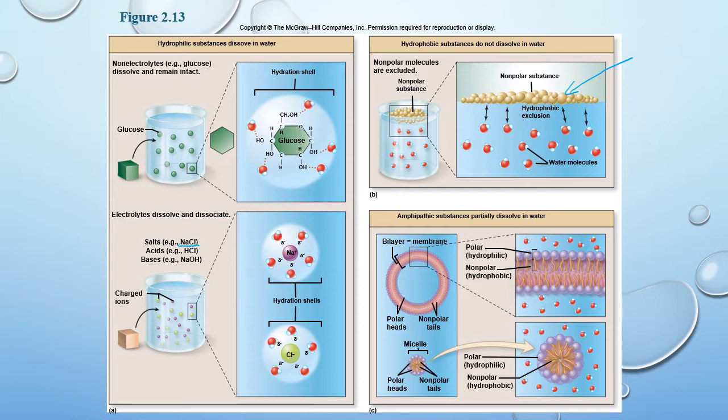Other substances are what we call amphipathic. Amphipathic substances are kind of halfway in between — they're a little bit hydrophilic and a little bit hydrophobic. One of the most important things we have within our bodies is that our cells have an amphipathic layer on the outside of the cell, and so that allows us to have a hydrophilic portion — essentially the heads of our layer on the outside of the cell, the plasma membrane.